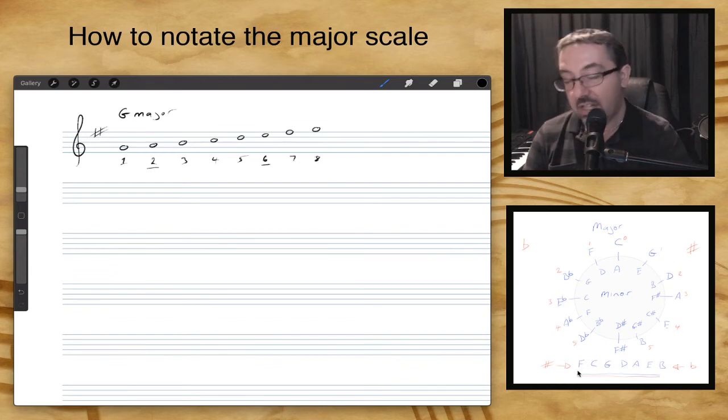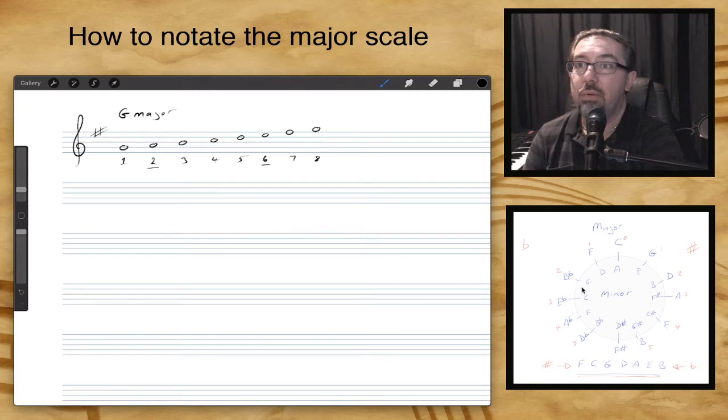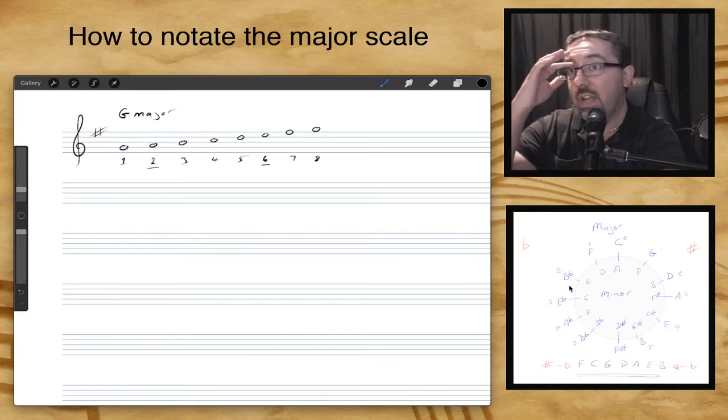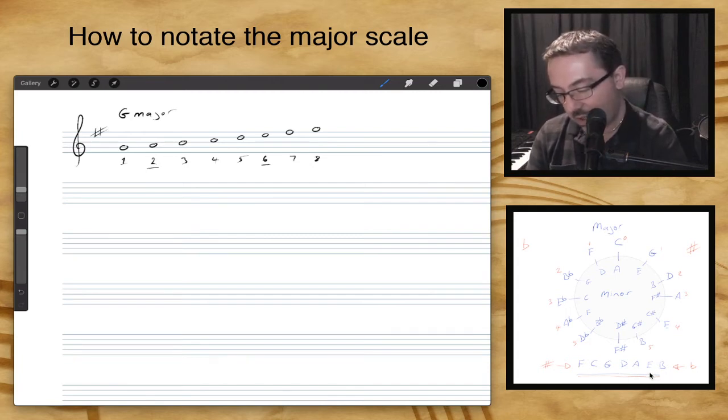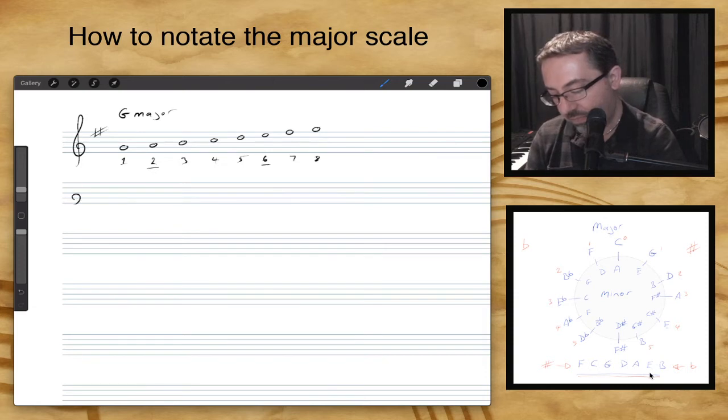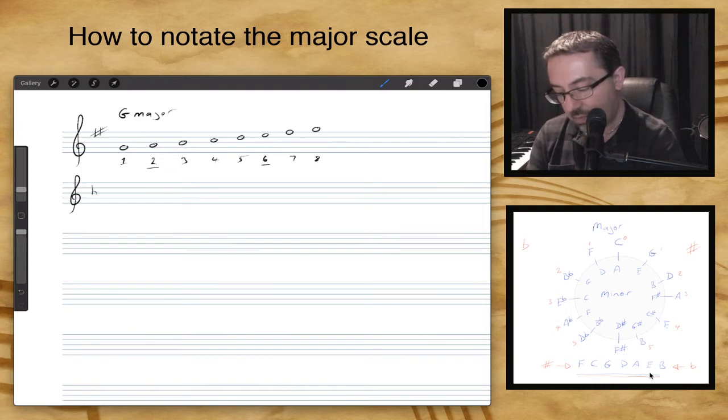So next scale, let's do another example. So back to our circle of fifths. I'm going to look at one of the flat keys. So over here we had our B flat. And in our key of B flat, we had two flats. So in our order of flats, the first two flats are B and E flat. So let's keep that in mind. So let's draw our next treble clef. Okay. We'll draw in our two flats. A B flat and E flat.